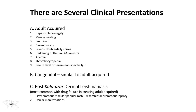Let's talk about the several clinical presentations of visceral leishmaniasis: adult acquired, congenital, and post-kala-azar dermal leishmaniasis. For adult acquired, you can have hepatosplenomegaly, muscle wasting, jaundice (described by the patient as yellowing of the eyes or skin), dermal ulcers, fevers of various chronicities, darkening of the skin — which is where the name kala-azar, meaning darkening fever, comes from — anemia (low red cell count), thrombocytopenia (low platelets), and a generalized rise in immunoglobulin G levels, reflecting a broad immune response.